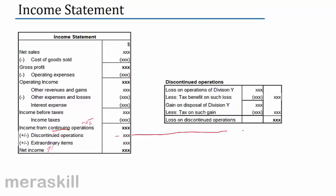The discontinued operations value comes from a schedule. Maybe a loss on operations of division Y — say division Y was closed. Tax benefit on such loss: if you are making a loss, the amount of taxes will come down, so loss less the tax benefit. Similarly, if there is a gain, taxes on such gain are deducted. The net amounts, net of tax, are totaled and then taken to the income statement.